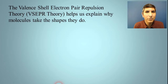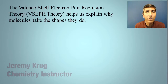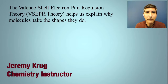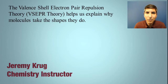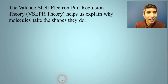Welcome back to AP Chemistry as we continue Unit 2, Section 7. In this video, we are focusing on the valence shell electron pair repulsion theory, sometimes called the VSEPR theory, and we're going to use this to help us understand the molecular geometries, bond angles, and shapes that these molecules tend to take.